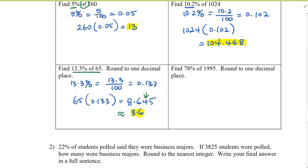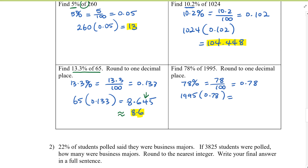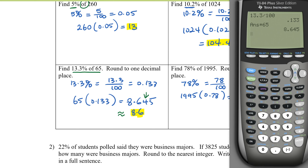One more: find 78% of 995. Convert 78% to proportion: 78 over 100 equals 0.78. Multiply: 995 times 0.78 equals 775.1. The question asks to round to one decimal place — the answer is already in one decimal place, so no rounding is needed. The answer is 775.1.